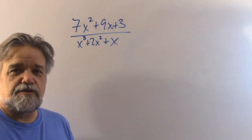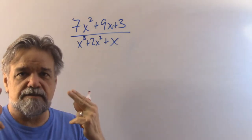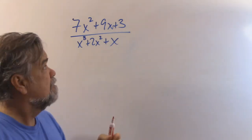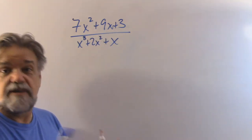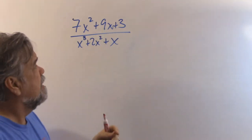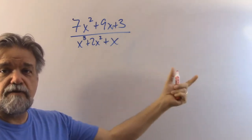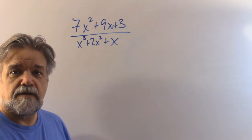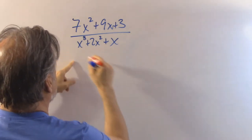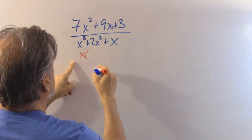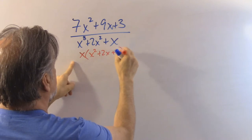I need to decompose that into partial fractions. So if we remember what we learned last time, the first step was to make sure that the degree of the numerator is not greater than the degree of the denominator. It's not, so that's cool. Then we factor the denominator. I can take an x out and get x squared plus 2x plus 1.